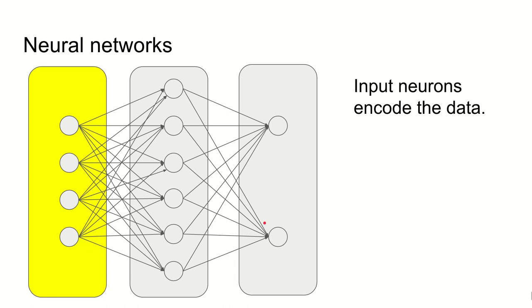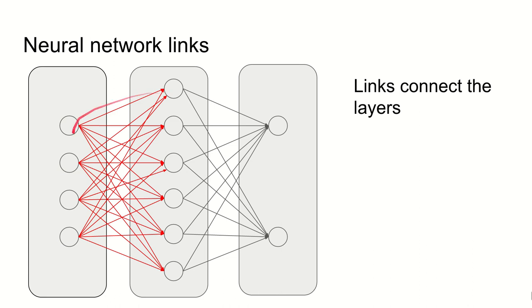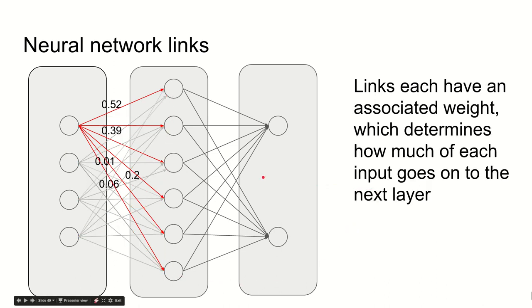With a neural network system you have a set of input neurons or input nodes which encode the data that you're looking at. You have links which connect nodes between layers. So this is a fully connected network. Every input node is connected to all of the nodes on the next layer. Links have an associated weight and these weights determine how much of the input goes forwards to each of the next nodes on the next layer. So a different proportion of the input goes forwards to each of the nodes on the next layer.